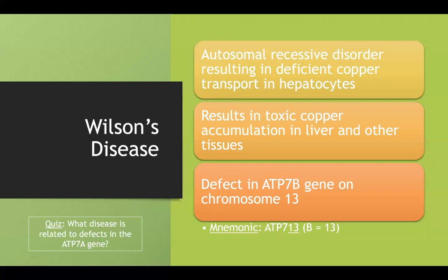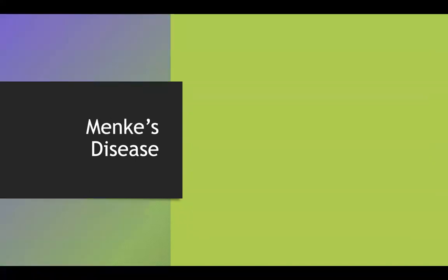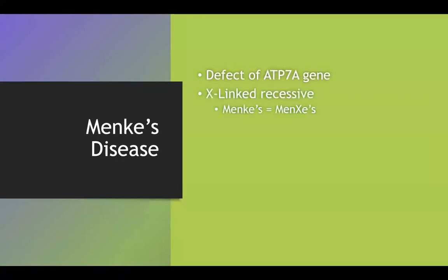There's another condition they're going to want you to know about for Step 1 and Level 1. The quiz question is: which disease is related to a defect in the ATP7A gene? That is Menkes disease, and it's X-linked recessive. I always remember that because the K in Menkes already looks like an X, helping me remember it's an X-linked disorder.